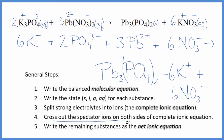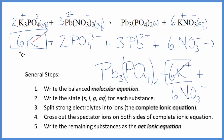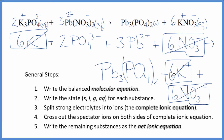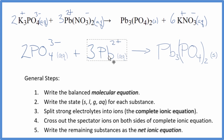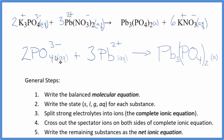Now we can cross out the spectator ions — those that appear on both sides of the complete ionic equation. In the reactants I see 6 potassium ions, and in the products as well — those are spectator ions. We also have 6 nitrate ions in the reactants and in the products — those are spectator ions as well. What's left is the net ionic equation for potassium phosphate plus lead-2 nitrate. I'll clean it up and write the states to get our final net ionic equation.